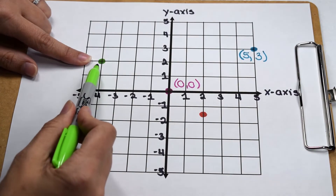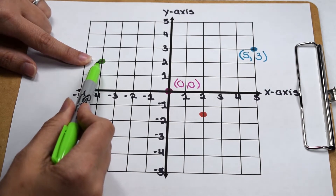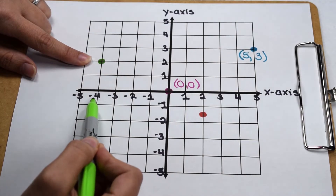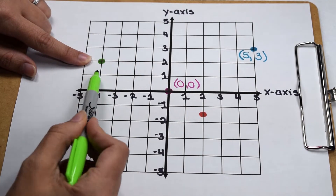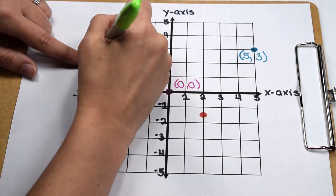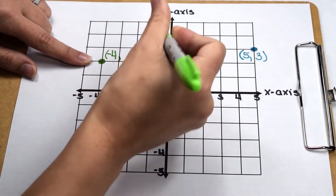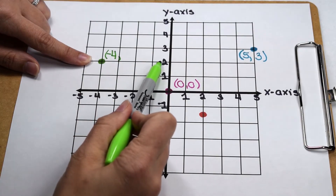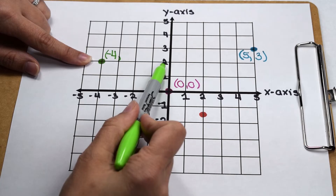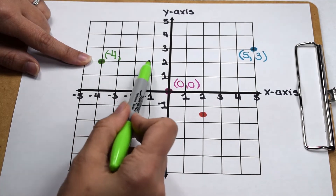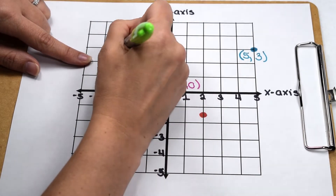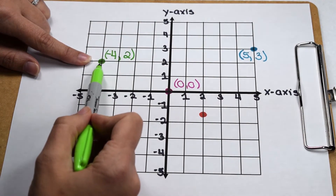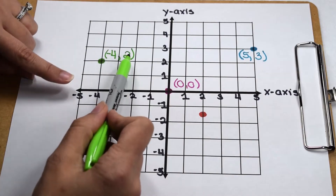Coming around to quadrant two, we can determine the location of this point. Checking its x-coordinate first, we notice we're to the left of the origin, so our x value is going to be negative. Our point lines up at negative 4, so in our ordered pair, our x-coordinate is negative 4. Checking its y value, we're above the origin so our y value is positive, and our point lines up with 2. So the ordered pair that best represents this point is (negative 4, positive 2).